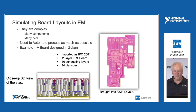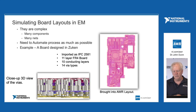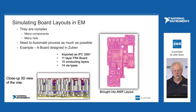What you see on the right is a board that we brought into Microwave Office using our new improved import tool. This board came from a Zucan layout — thank you, Zucan, for the board. You can see the details here: it's an 11-layer FR4 board, and it's complicated. This would be typical of a big system board that you would see in base stations — a very typical commercial board that our customers would make. In this board, there are parts that should be EM-simulated: the RF sections.